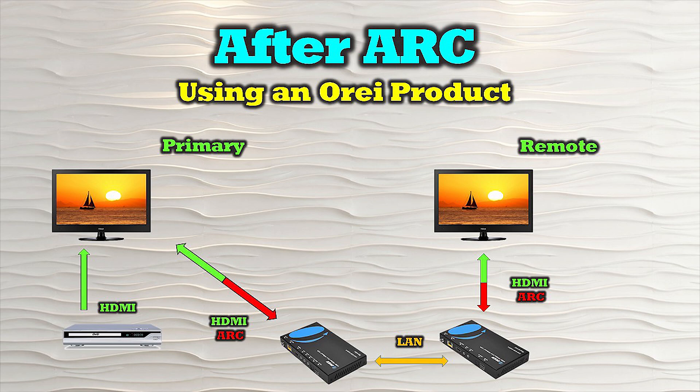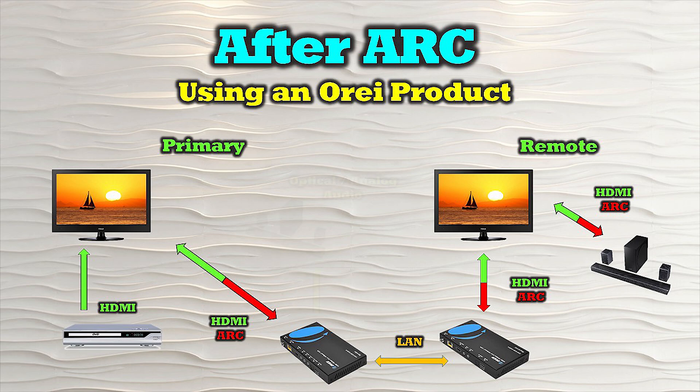Most receivers in the HDMI extender kits provide support for ARC audio, and you can simply connect a second HDMI cable between the HDMI ARC output on the TV and your soundbar to enjoy theater quality sound. You also have the option of connecting a soundbar at the primary location to the sender module using an analog or digital cable. Now I'll show you the basic connections you'll need to make if you're using an O-Ray HDMI extender kit.